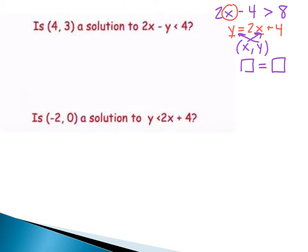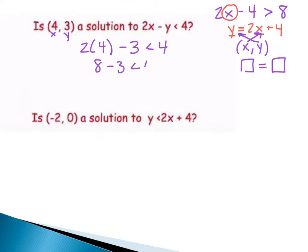The same thing is true for inequalities. If I give you the point (4, 3) — 4 representing x, 3 representing y — and I look at the inequality 2x minus 4y, I plug in 4 for x and 3 for y. I get 2 times 4 minus 3, and I want to know: is that less than 4? I get 8 minus 3 is 5. Is 5 less than 4? No, this is not true. So this point is not a solution.